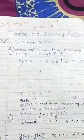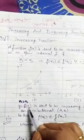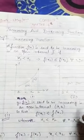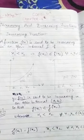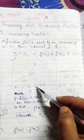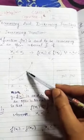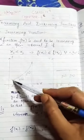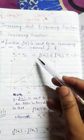We will understand this with a graph. We have taken a function y = f(x), said to be increasing in an open interval. The interval we have taken is (a, b), so this is a and this is b. Now we will see this graph continuously increase. When we explain this increasing function...